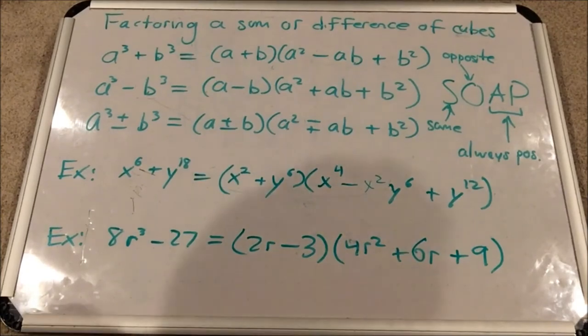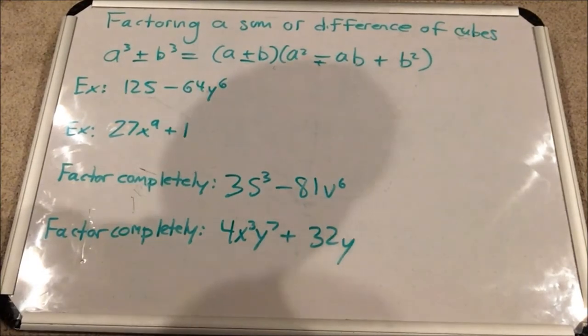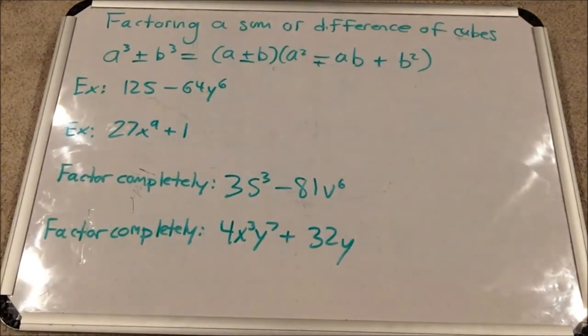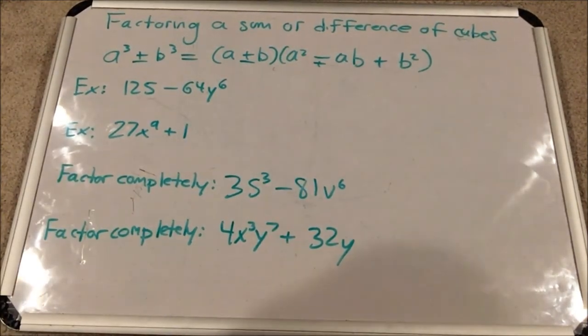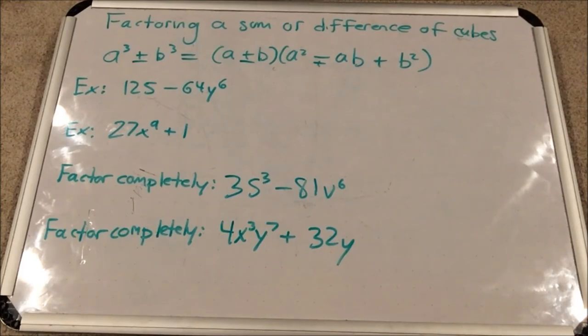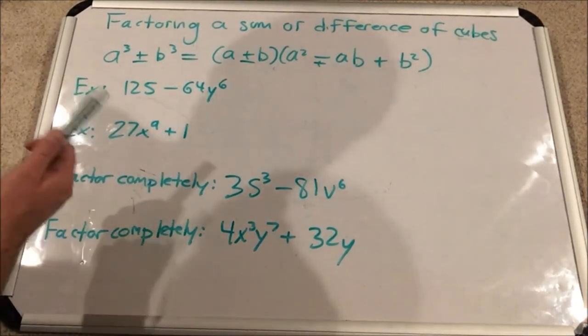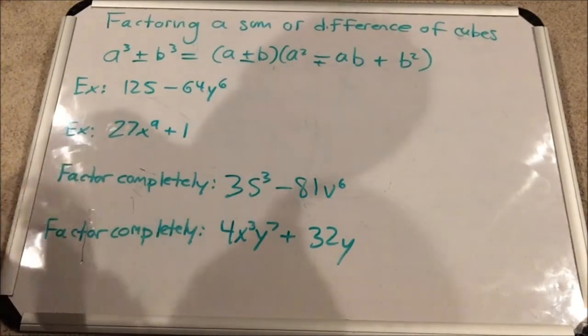Now let's look at some more challenging ones. All right. So let's check out this first example on this page. 125 minus 64, y to the 6. This might strike you as a little odd, but just check and make sure that both terms have cube roots that are perfect. 125. What's the cube root of 125? That's 5. 5 times 5 times 5 is 125.